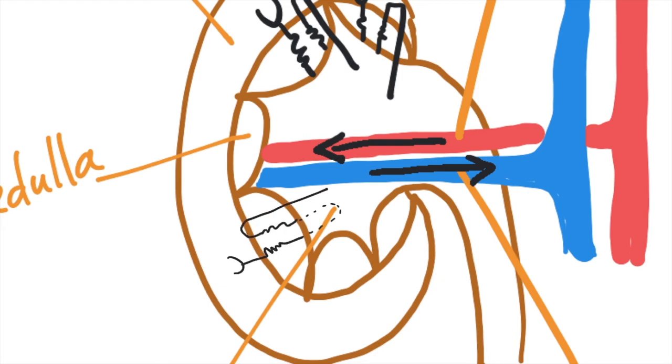So next time you do a kidney dissection, lift up that pelvis with a needle and have a little look at the medulla. The medulla is an important region we'll deal with in another video.